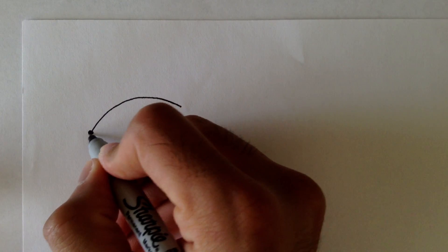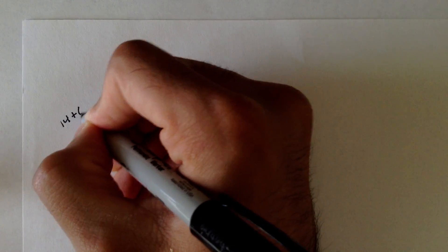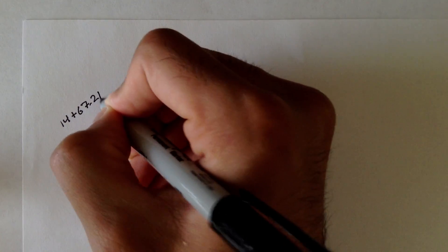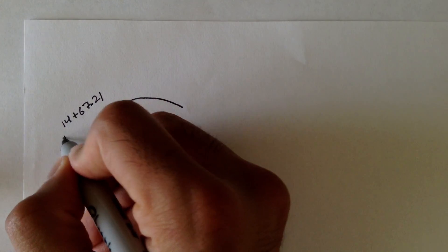Alright, for our first example, we have this horizontal curve, and we have some given parameters. We have that the beginning of curve, or BC, starts here, and that's at station 14 plus 67.21. That's the BC.